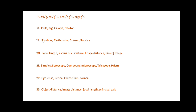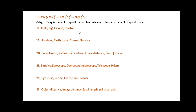Next question involves units: Calorie per gram; Calorie per gram degree Celsius; Calorie per gram degree Celsius; Calorie per gram degree Celsius. Friends, in this, Calorie per gram is the odd one out. Since Calorie per gram is the unit of specific latent heat, while all others are the unit of specific heat.